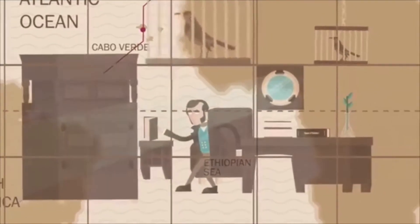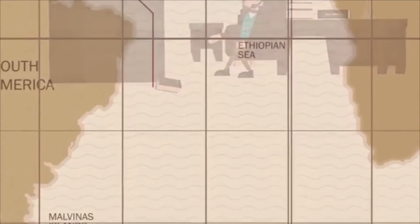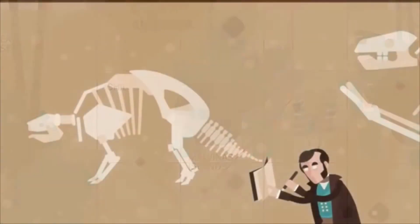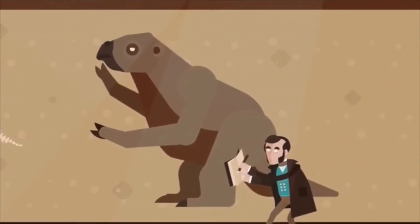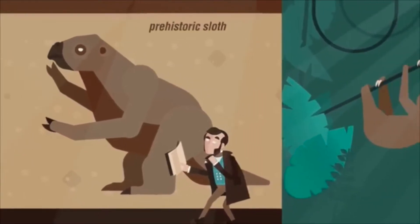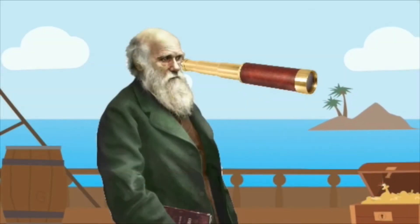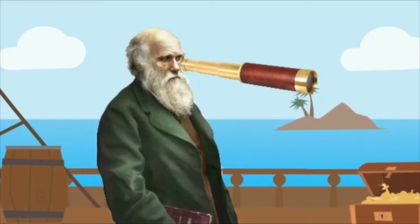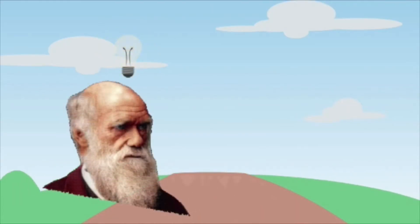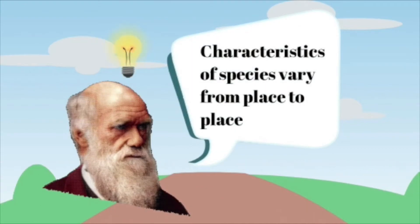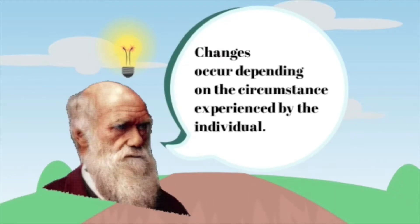He noticed that the survival and adaptation of finches depended on the environment they were living in. Charles Darwin was greatly inspired by Thomas Malthus, best known for his hugely influential theories on population growth. Malthus wrote Essay on the Principle of Population in 1798, which Darwin read and was inspired by. While on his voyage in the Galapagos Islands, Darwin encountered 14 varieties of finches on the various islands, and concluded that characteristics of similar species vary from place to place — changes occur depending on the circumstances experienced by the individual.